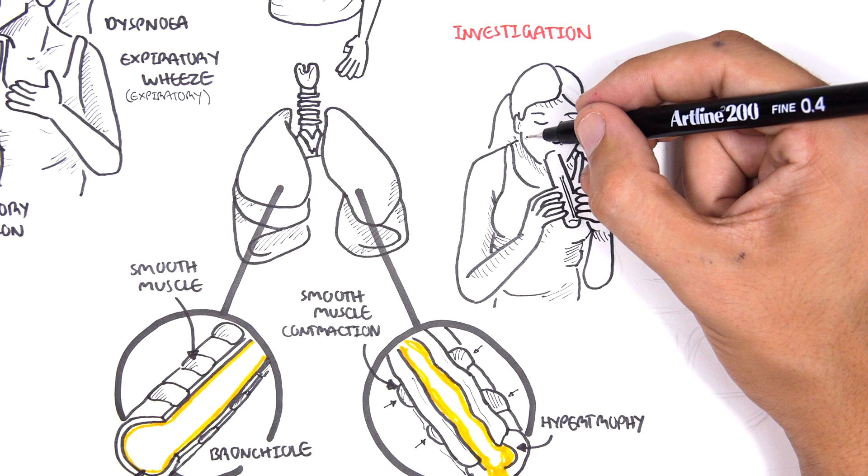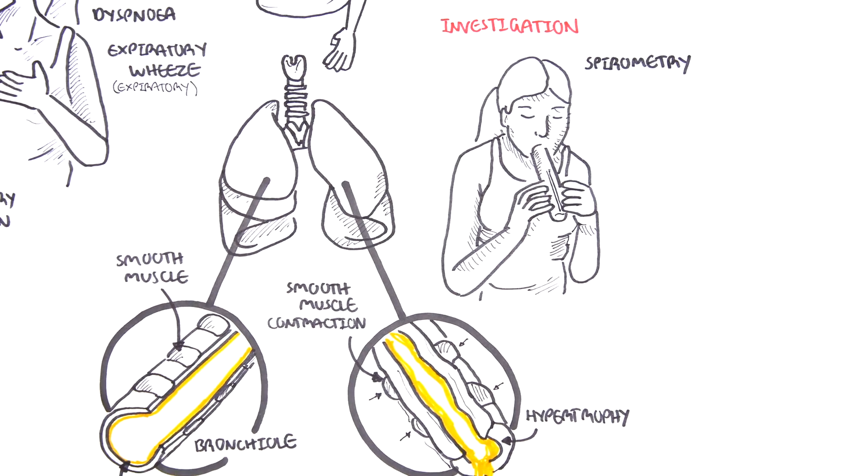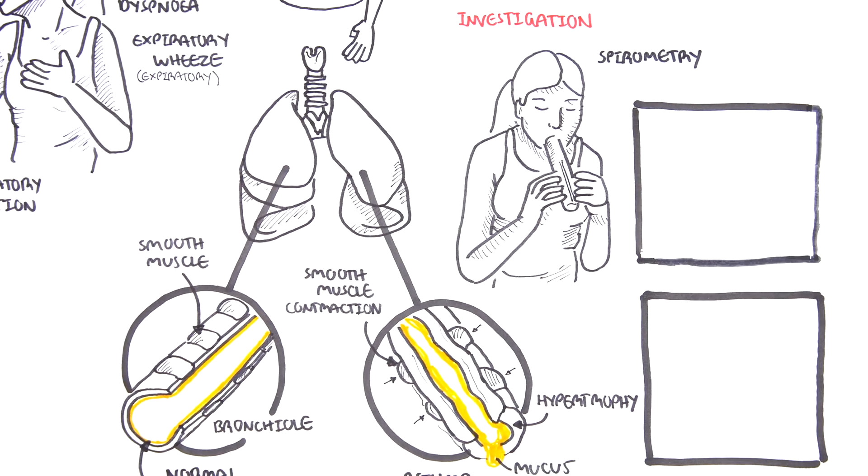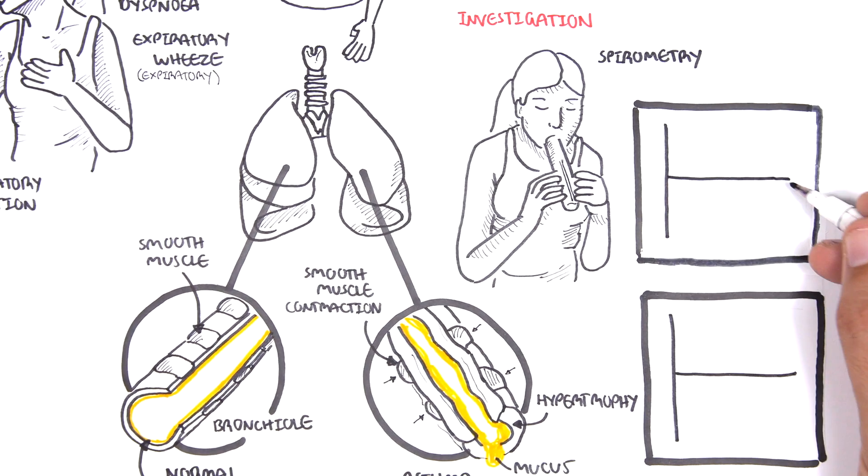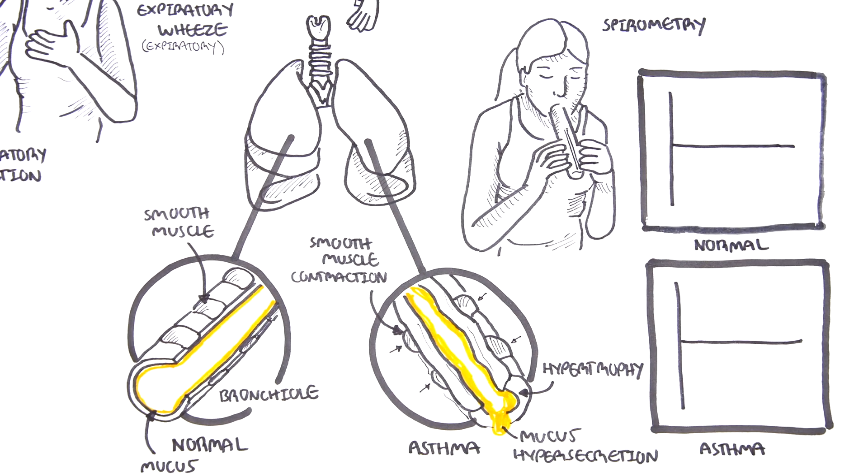This tests lung function. There is also spirometry, which in asthma shows an obstructive pattern. The spirometry will give you an FEV1 over FVC ratio, which is your forced expiratory volume at 1 second over your forced vital capacity. This ratio is important in diagnosing obstructive diseases, including asthma.